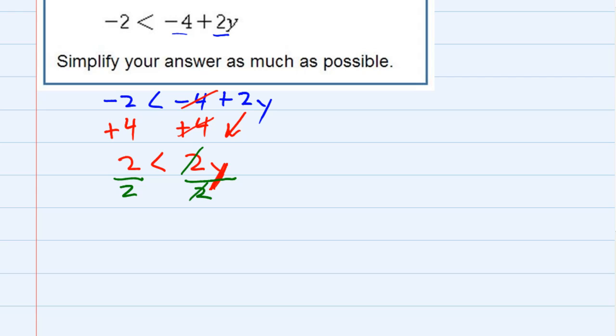The 2s will then cancel, leaving me with the y by itself on the right-hand side. Dividing by a positive means that the sign stays the same. And on the left-hand side, 2 divided by 2 just gives me 1.